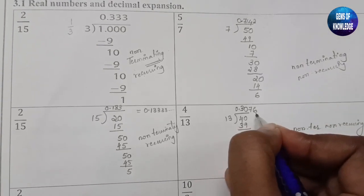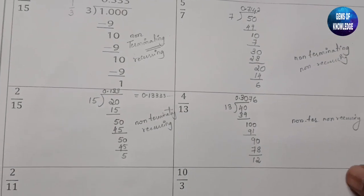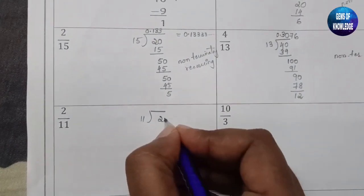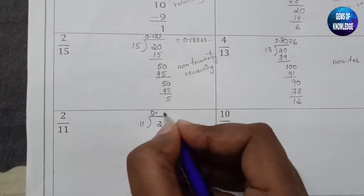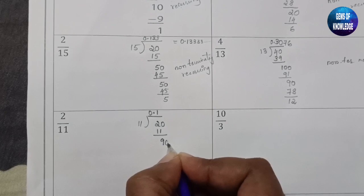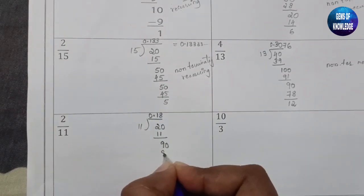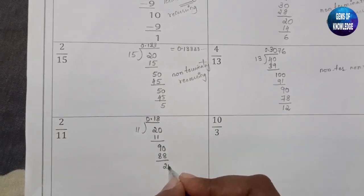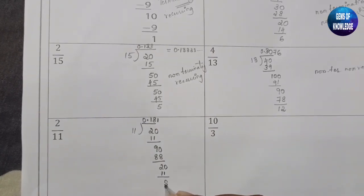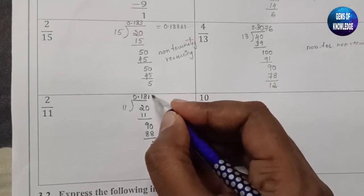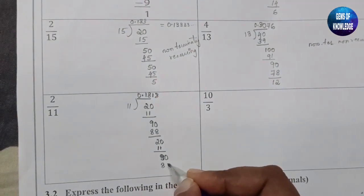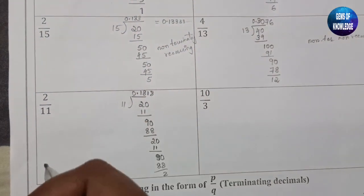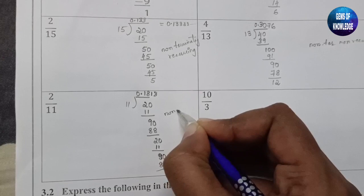Next is 2 by 11. Put a 0 and a point. 11 ones are 11 — wait, we have 20, so 11 ones are 11, remainder 9. Take 90 — 11 eights are 88, remainder 2. Back to 20 — 11 ones are 11, remainder 9 again. Take 90 — 11 eights are 88, remainder 2. So the pattern 1, 8, 1, 8, 1, 8 repeats, giving non-terminating recurring.